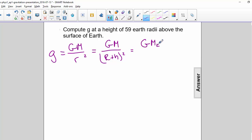So we're talking about the Earth, so we'll put in the mass of the Earth, and the radius of the Earth plus 59 times the radius of the Earth.